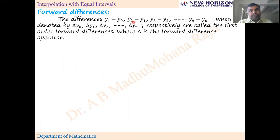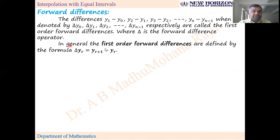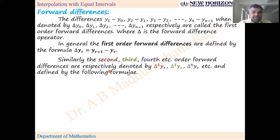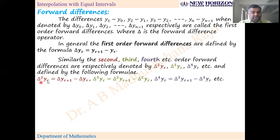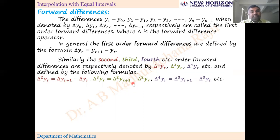The differences y₁ − y₀, y₂ − y₁, y₃ − y₂, ..., yₙ − yₙ₋₁, denoted by Δy₀, Δy₁, Δy₂, ..., Δyₙ₋₁ respectively, are called the first order forward differences, where Δ is the forward difference operator. In general, Δyᵣ = yᵣ₊₁ − yᵣ. Similarly, second, third, and fourth order differences are defined: Δ²yᵣ = Δyᵣ₊₁ − Δyᵣ; Δ³yᵣ = Δ²yᵣ₊₁ − Δ²yᵣ; Δ⁴yᵣ = Δ³yᵣ₊₁ − Δ³yᵣ. That is, second order differences come from first order, third from second, and fourth from third.